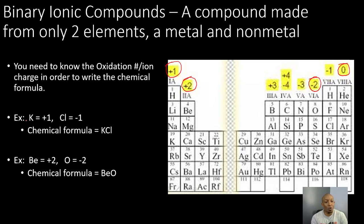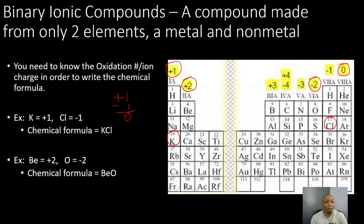Looking at our first example: potassium has a plus 1 charge and chlorine has a negative 1 charge. A positive 1 and a negative 1 cancel each other out to give a charge of zero, so our chemical formula is KCl. When written out, the compound name is potassium chloride.